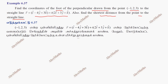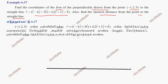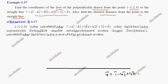We have one straight line. This is the equation: R vector equal to i minus 4j plus 3k plus t times of 2i plus 3j plus k. That is the line. The point is P, which is minus 1, 2, 3.